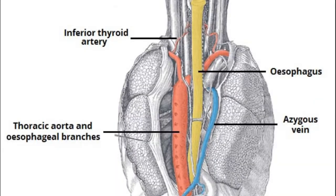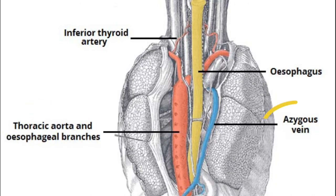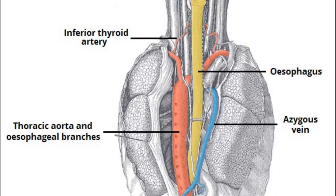For the posterior mediastinum, you have 4 VANs. You have the descending aorta, then you have the azygos vein and the hemi-azygos vein. Then you have 1 nerve which is the vagus nerve. Along with that, you have the esophagus and the thoracic duct.